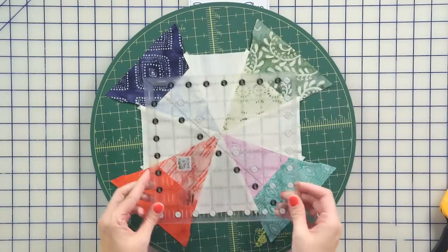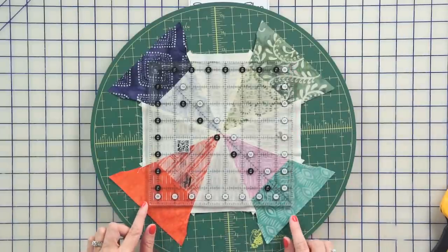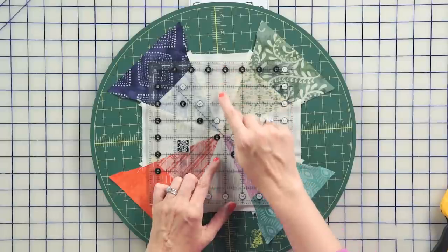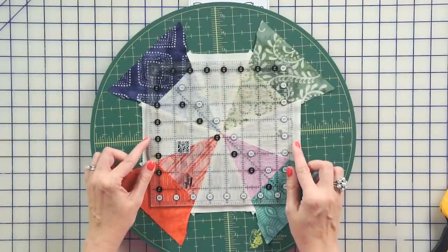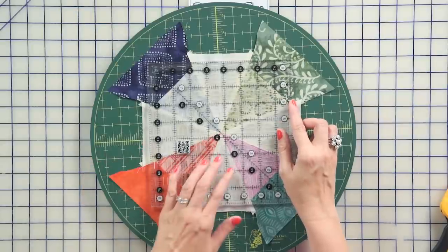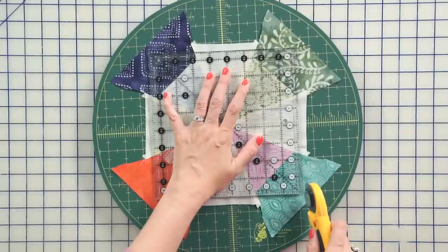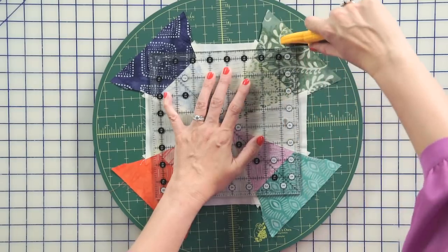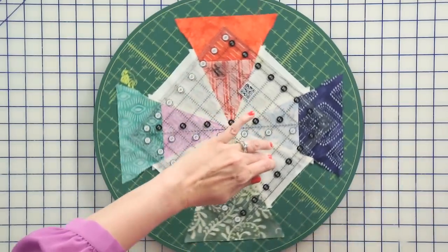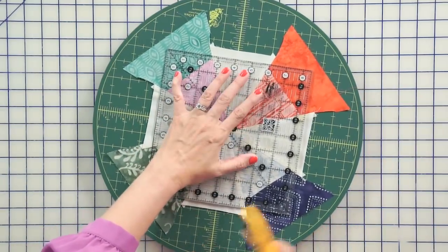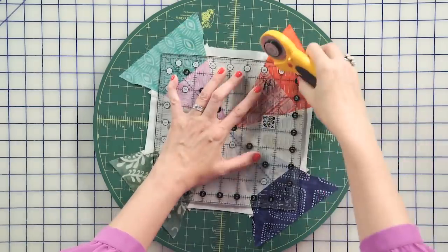Okay, now we're gonna trim our block. We're gonna trim it to 8 1⁄2-inch squares. So I'm using an 8 1⁄2-inch Creative Grids ruler. This ruler has white lines that go down the end, so you kinda wanna center that in your center of your triangle. And then you're gonna put your point right on this circle. Now we're gonna use our Matilda rotating mat. I'm gonna cut on two sides. And I'm gonna spin, nothing is going to move. And I'm gonna cut the last two sides. And you've got a perfect block.